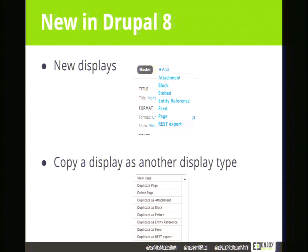Now let's talk briefly about things brand new to Drupal 8. There are some new displays. If you're coming from Drupal 7, there's a new option for REST export. Drupal 8 is really good at headless Drupal — accessing content without going to the website directly. If you want to integrate with a mobile app, an API, or make your website an API, choose REST export and access your view through JSON or XML. All built in, no extra modules needed.